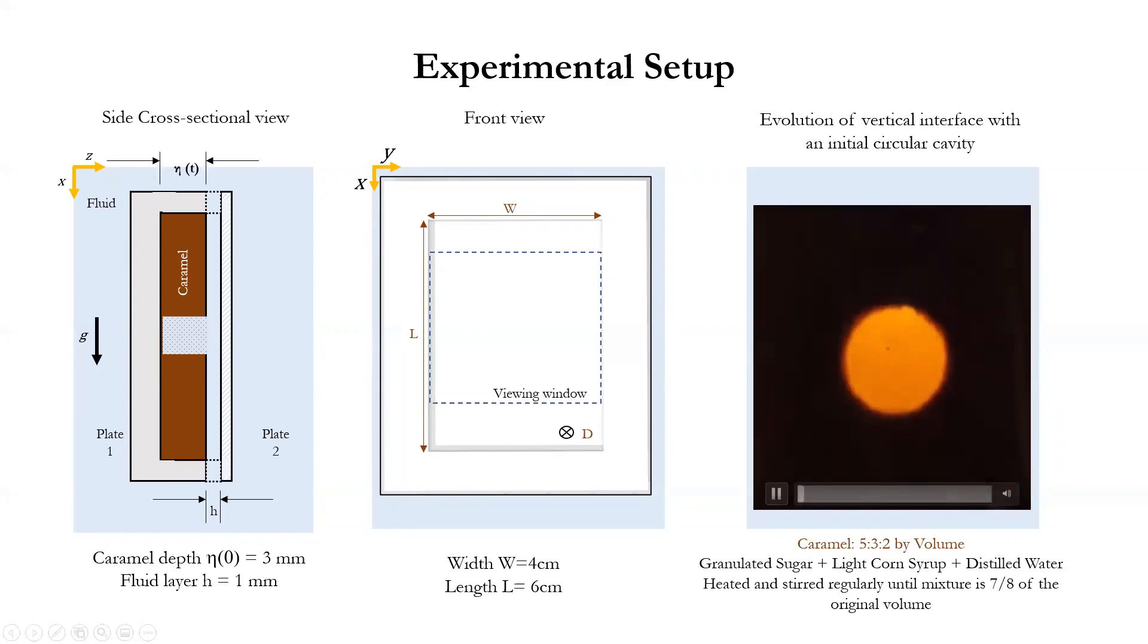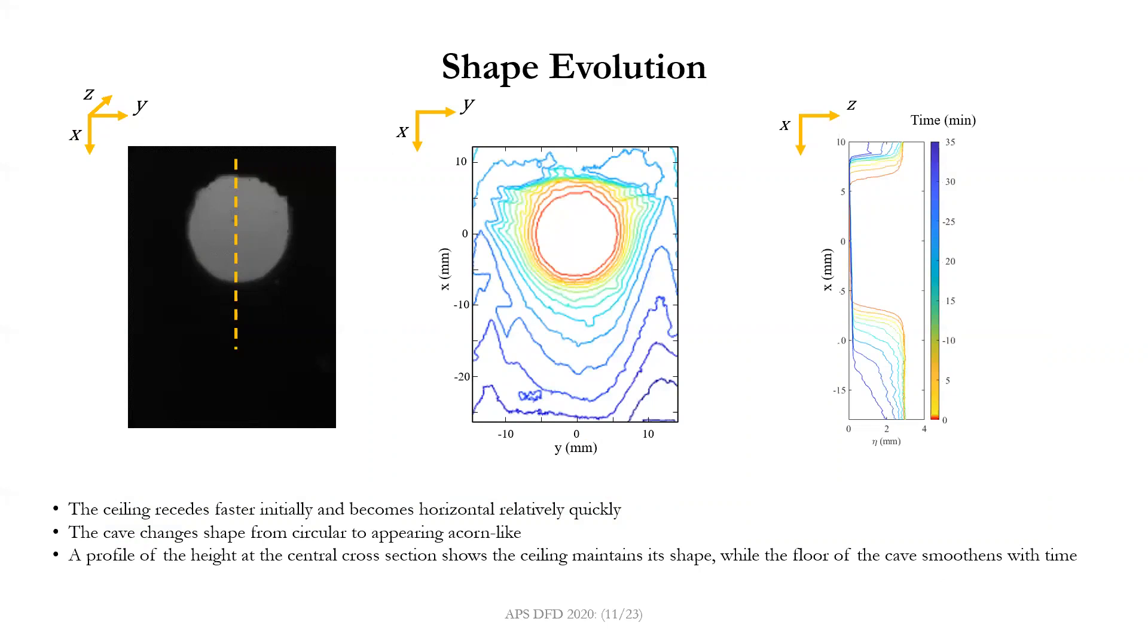The ceiling seems to recede faster than the bottom, and we can take images at four minute long intervals and then just look at how those boundaries look at that point and put those here on top of each other as you can see here. The ceiling has receded faster initially and it flattens as the edge downstream stretches. The entire cave now develops some acorn-like shapes. If we look just at the central profile as shown here, we can also empirically relate the intensity of the images to the local height eta of the caramel. As you can see here, the cave maintains its shape on the top while the floor of the cave smoothens. So the ceiling kind of maintains this roughly 90 degree angle and the floor of the cave gets smoother and smoother as time goes on.